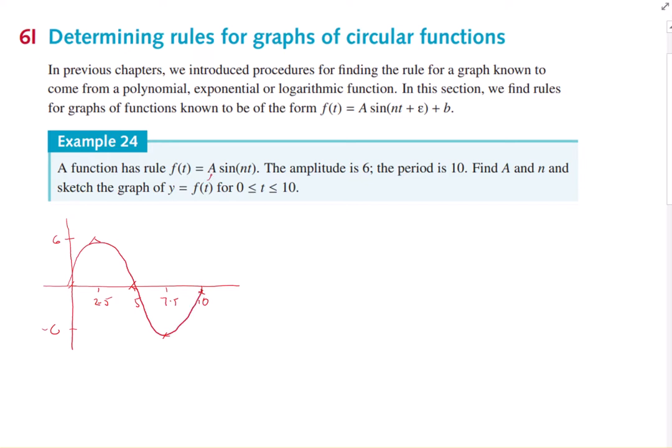So we know the amplitude, so a is equal to 6. Remember the amplitude, the distance is never negative from the middle to either the maximum or minimum. And the only thing we need to know now is this n value.